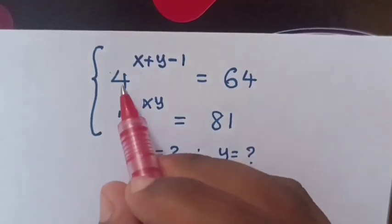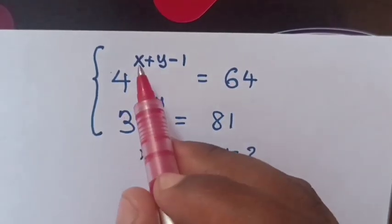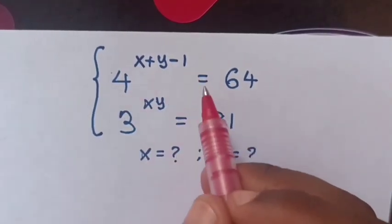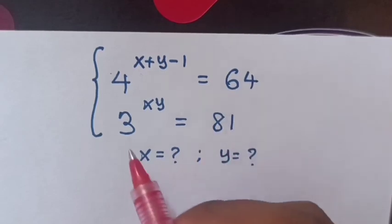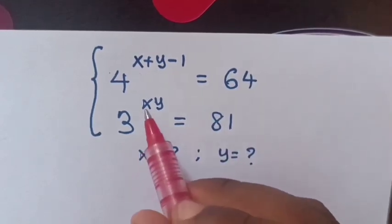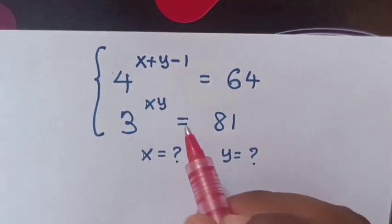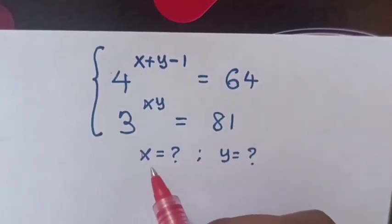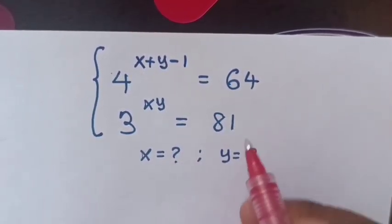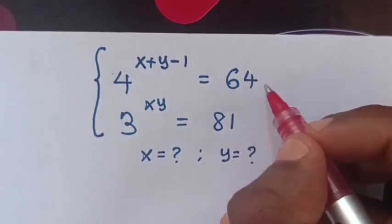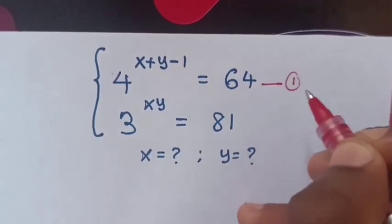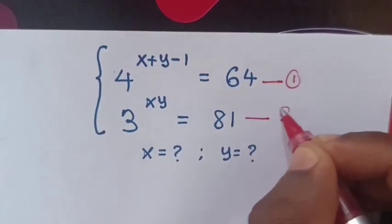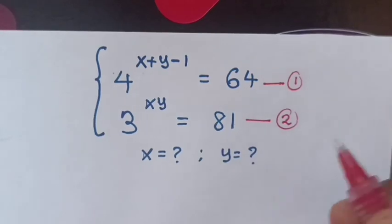How to solve a system of equations: 4 to the power of (x plus y minus 1) is equal to 64, and 3 to the power of xy is equal to 81. Find the value of x and y. We let the first expression be equation 1 and the second be equation 2.